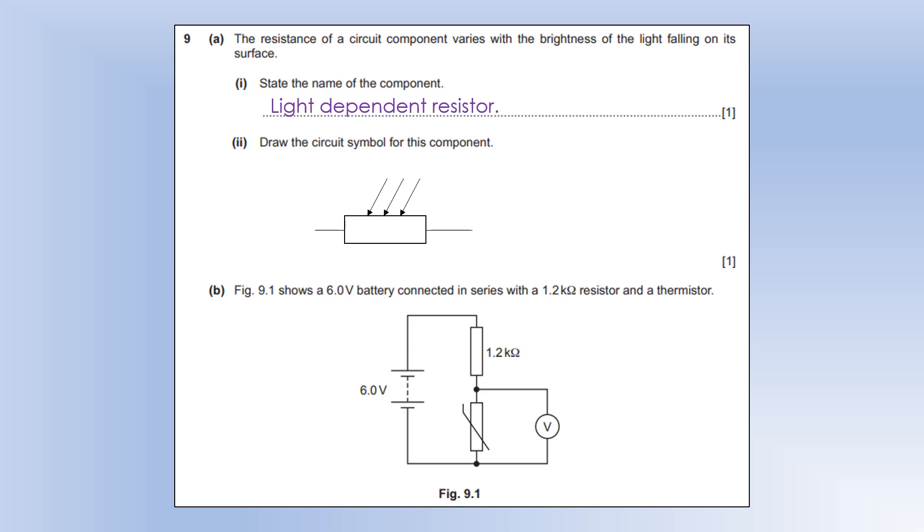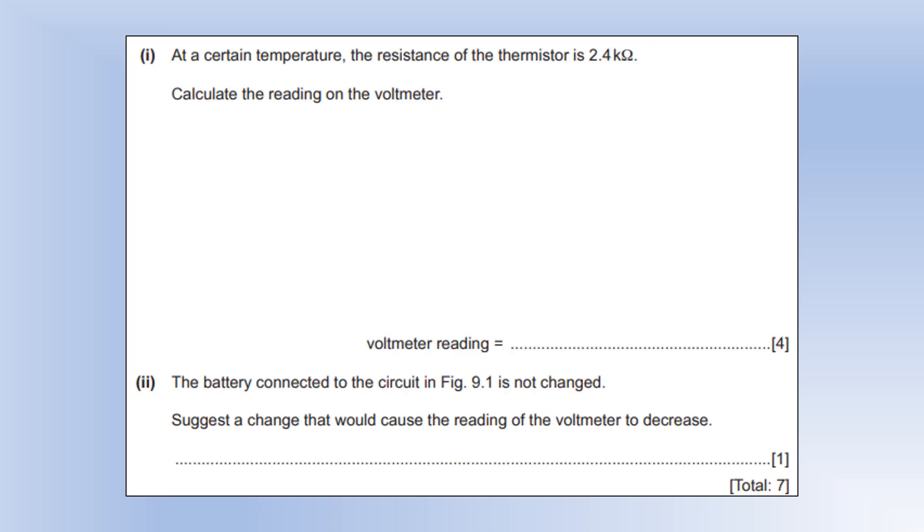The diagram shows a 6-volt battery connected in series with a 1.2 kilo-ohm resistor and a thermistor. At a certain temperature, the resistance of the thermistor is 2.4 kilo-ohms. Calculate the voltmeter reading. I'm going to use the potential divider equation to do it. So, the potential difference is 6. The resistor we're interested in is the 2400. Now, you get 4 volts. We could have also calculated the current and then used V equals IR to calculate the potential difference, but that would have given us 4 volts.